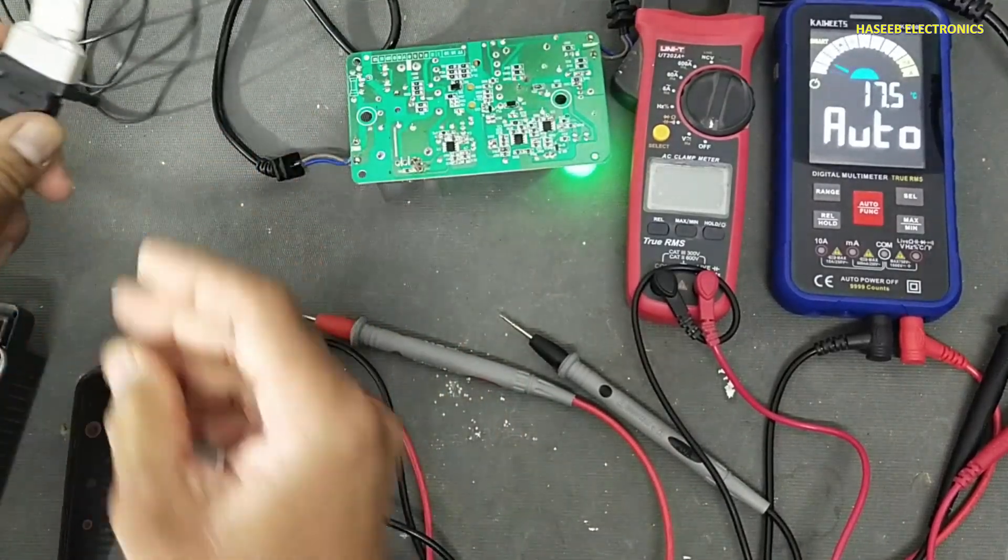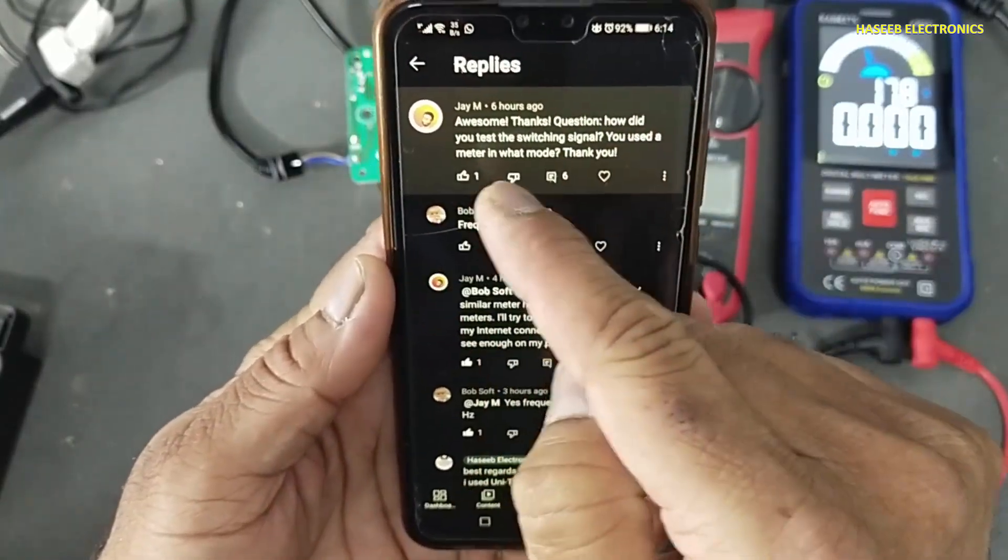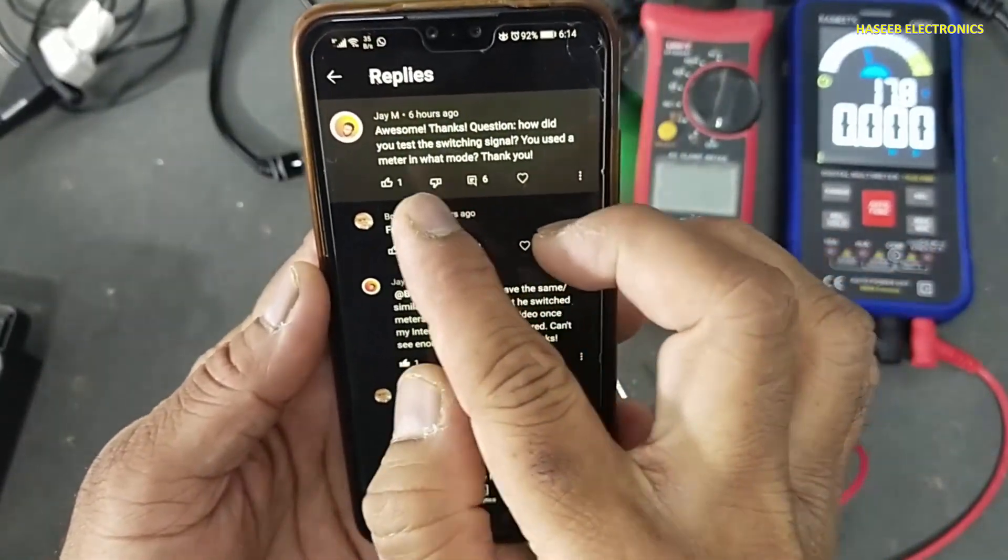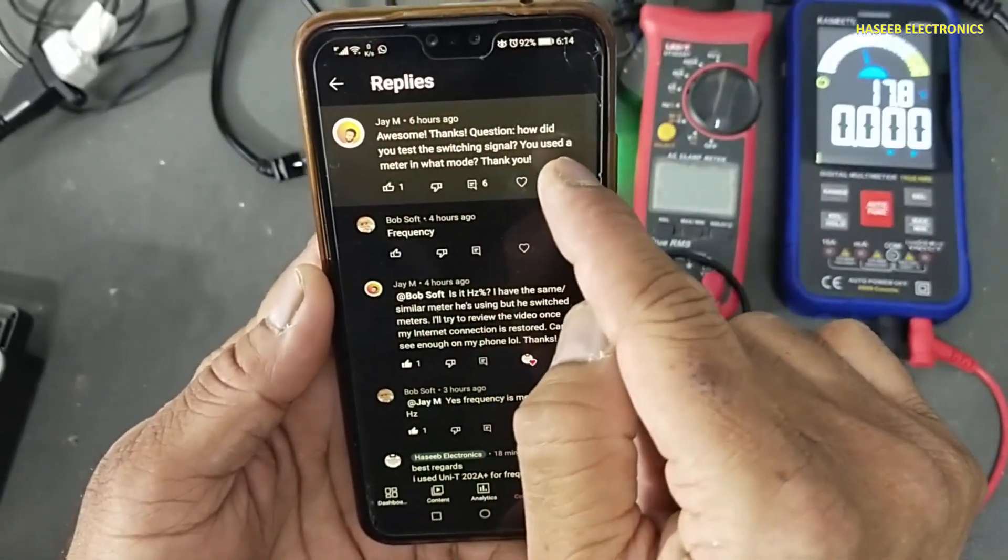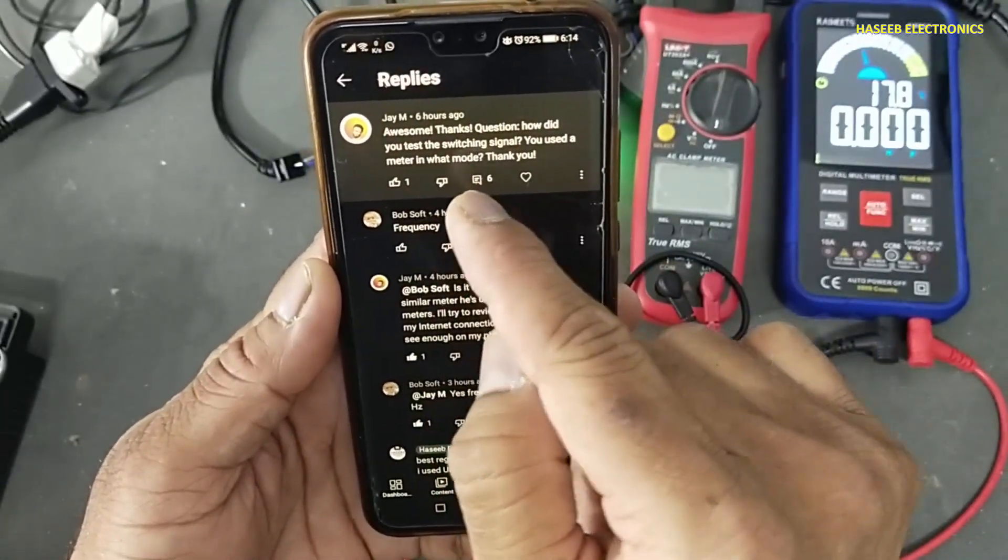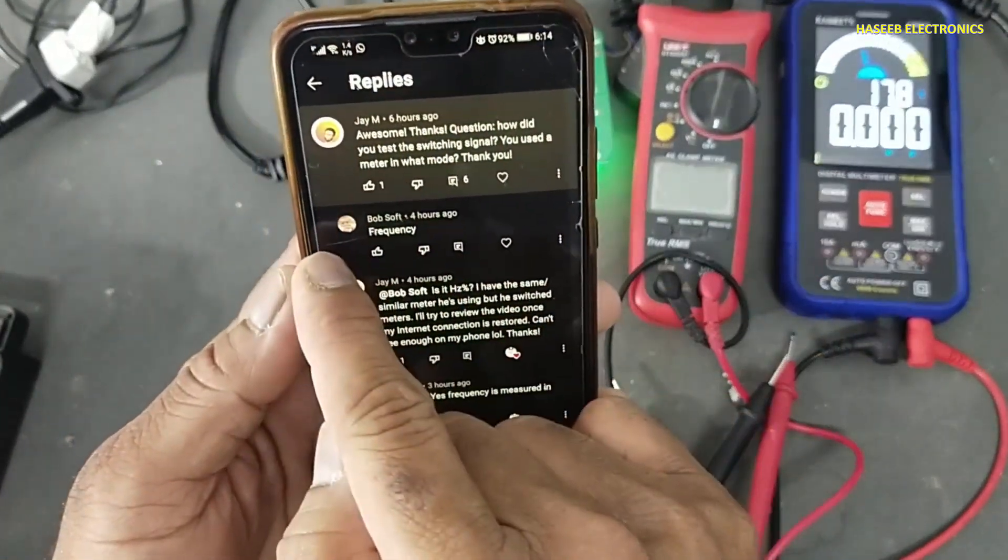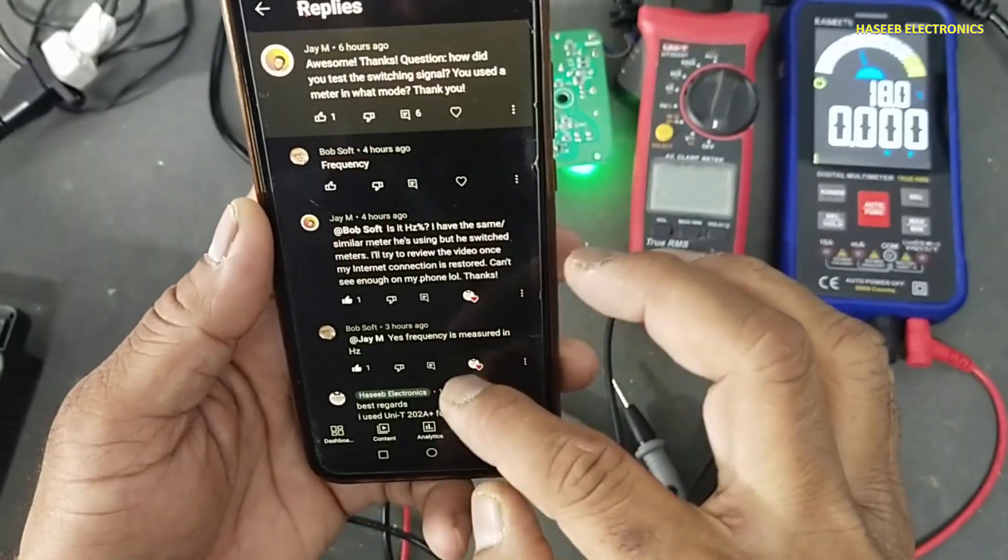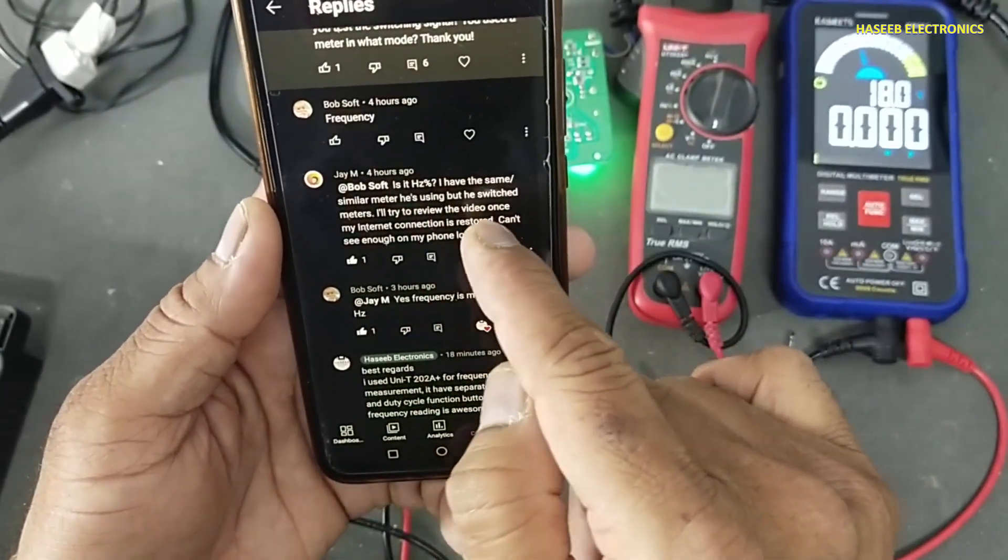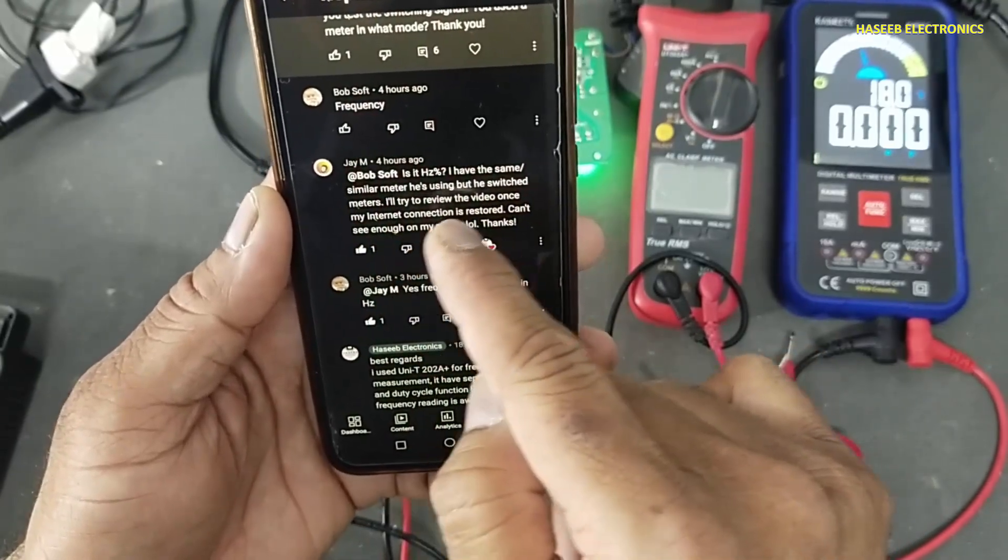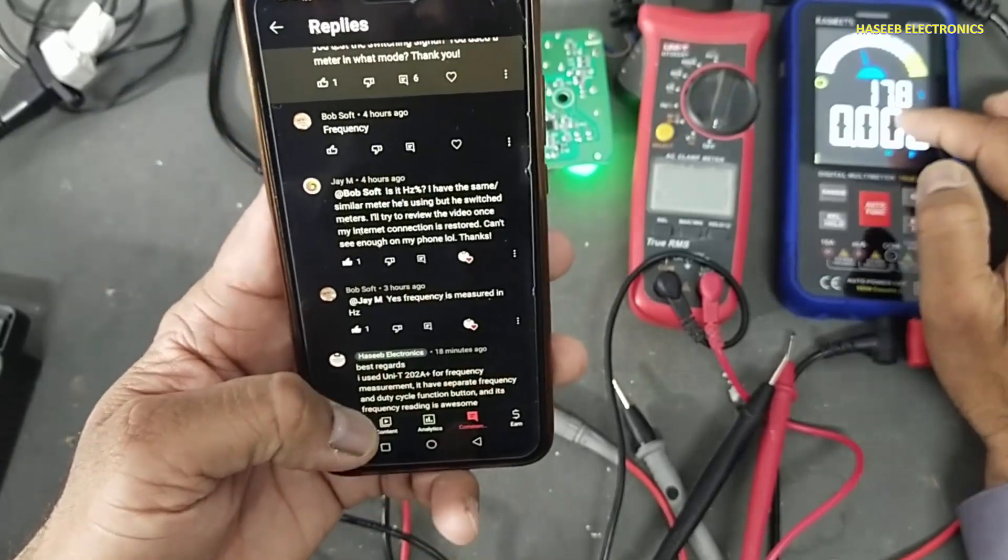I will connect power. Here was a discussion between my viewers. Question: did you test the switching signal? You used multimeter in what mode, in which function? I tested the frequency. Bobsoft says frequency, and then is it hertz the same? Similar meter, this one has the same function.